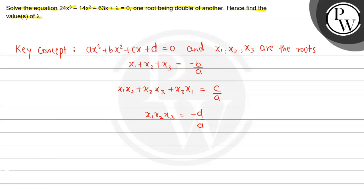The solution is: write down the equation first, that is 24x³ minus 14x² minus 63x plus λ equals 0. Let α be one root, and the other root being double, that is 2α, and the third root is β.